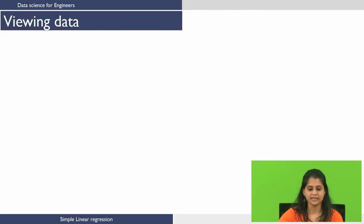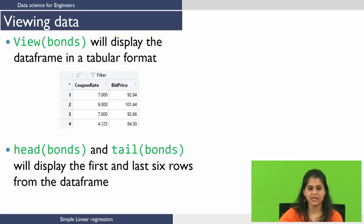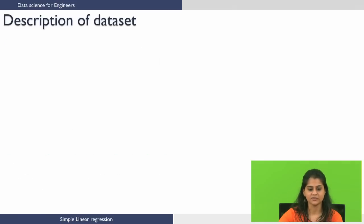Let us see how to view the data. View(bonds) will display the data in a tabular format. We can also view the first few rows of any data set — the head and tail functions will help us do that. head(bonds) will give us the first six rows from the data, and tail(bonds) will give us the last six rows from the data.